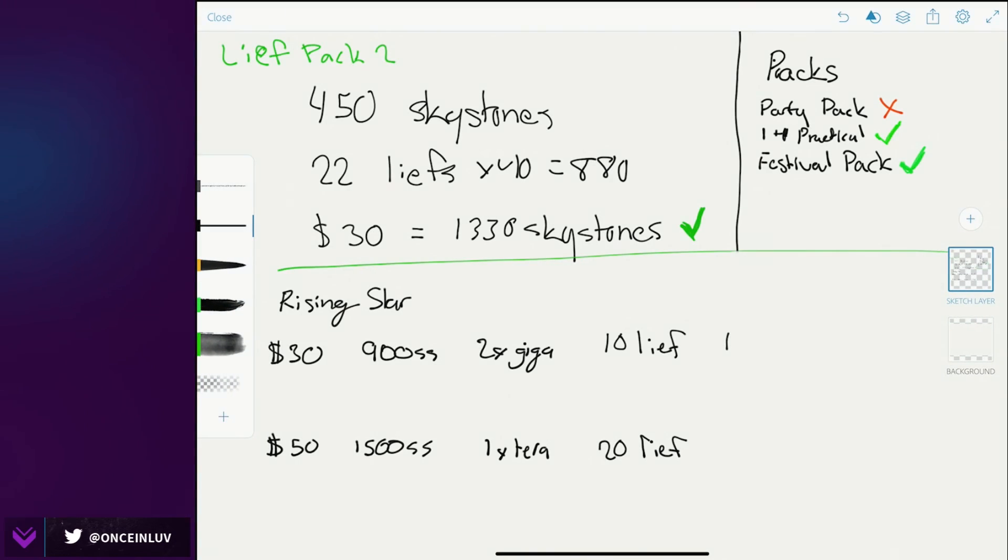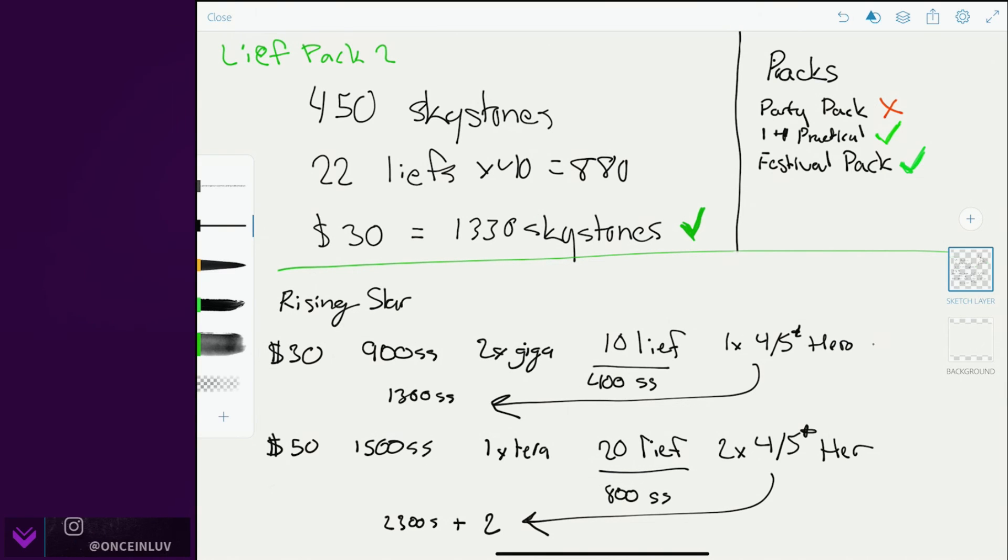Okay so we look at the value of this. These 10 leaves are worth 400 skystones, right, and these are worth 800 skystones. So when you add these together you already have a value of 1300 skystones plus that plus the hero ticket. On this side you have 2300 skystones plus the two of those, right. The value for this pack is most definitely there. Strictly on skystones it all depends on how much you value the hero ticket, but I think that even for 300 skystones difference, if you're multiplying the leaf pack 2, even though it's 50 versus 60 dollars, I think it's still fine.